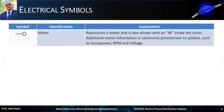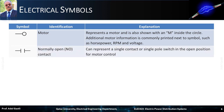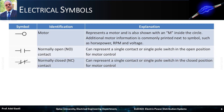Additional motor information is commonly printed next to the symbol, such as horsepower, speed in RPM, and voltage. The next symbol represents a single contact or single pole switch which is in the open position, and which is used for motor control. The next symbol represents a single contact or single pole switch which is in the closed position, and which is used for motor control.